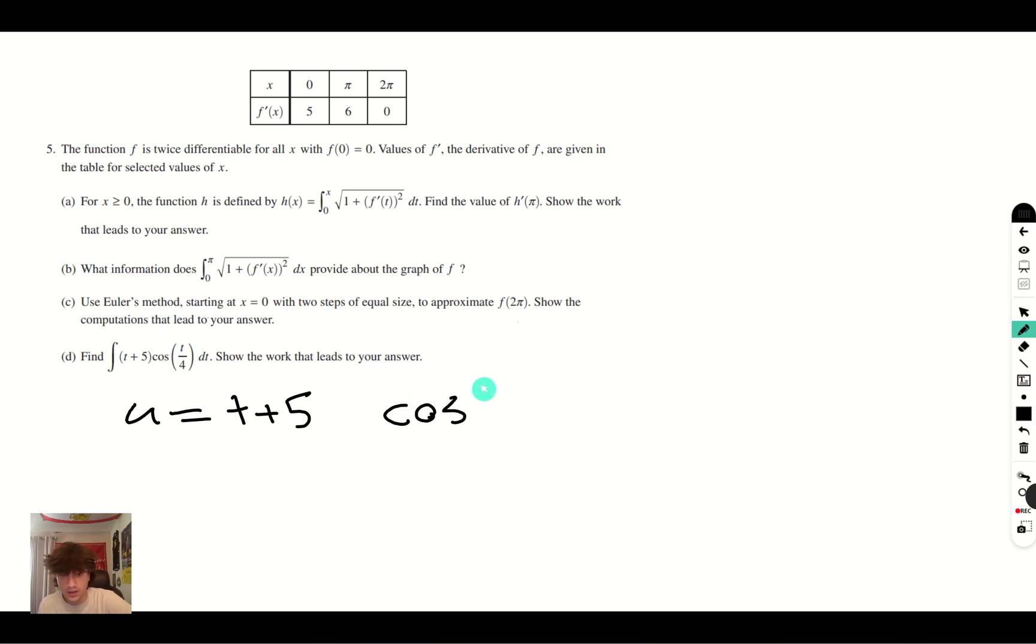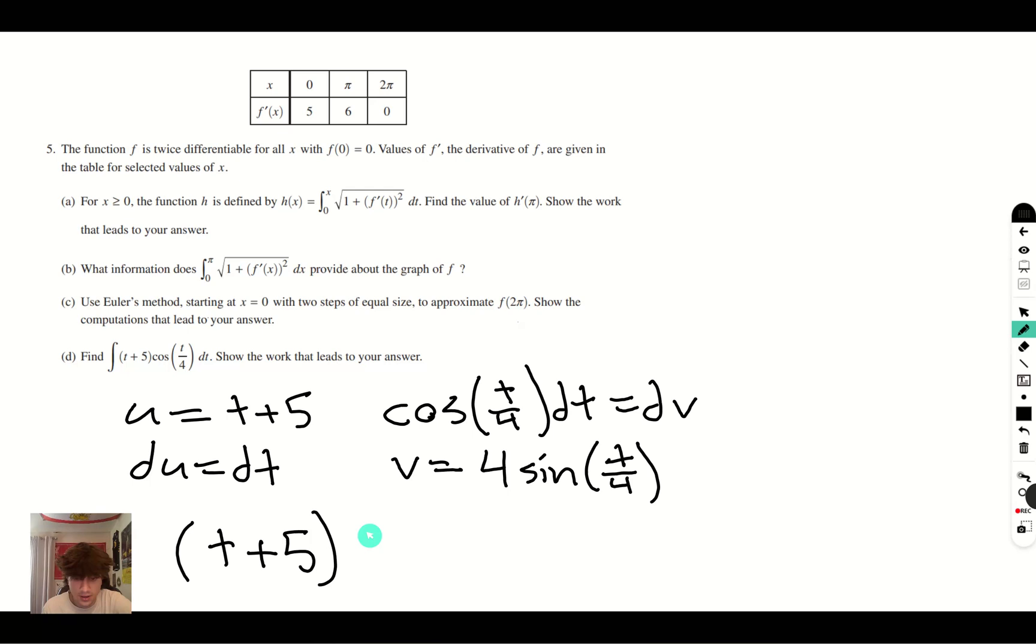The derivative of this is going to give you just dt, and when we integrate both sides, you get that v = 4sin(t/4). So there you have that. So then you multiply these together, (t + 5)4sin(t/4) minus the integral of v du, which is the integral of 4sin(t/4) dt.